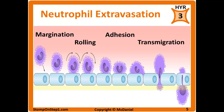Rolling is the next step. Cytokines cause the release of selectins on the surface of endothelial cells lining the vessel. Selectins loosely interact with carbohydrates on the surface of neutrophils called sialyl Lewis X. This causes the neutrophil to stick loosely to the vessel wall and roll along it — one interaction briefly sticks part of the neutrophil to the wall, then releases, and a new interaction forms nearby, creating a rolling effect.